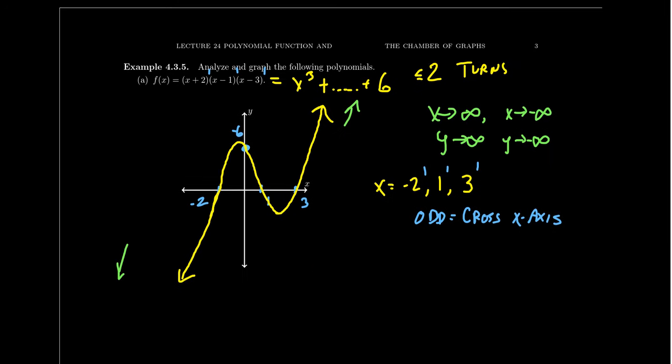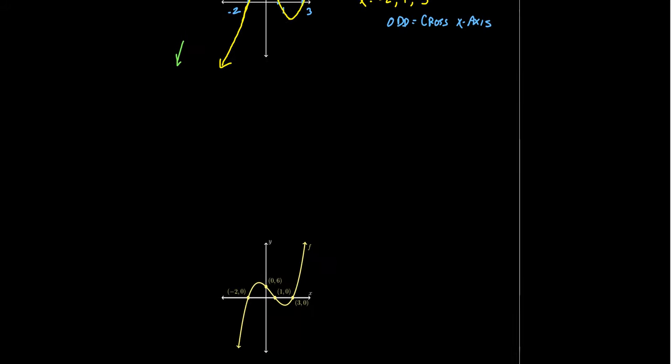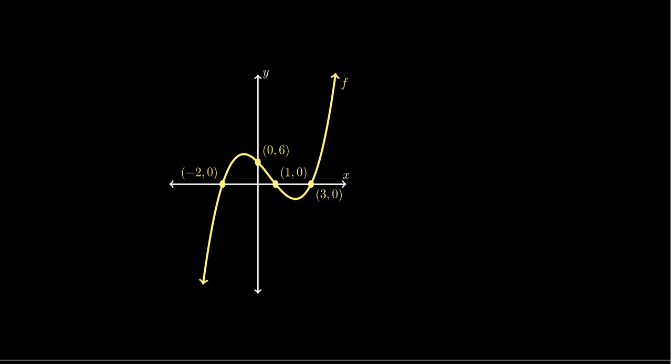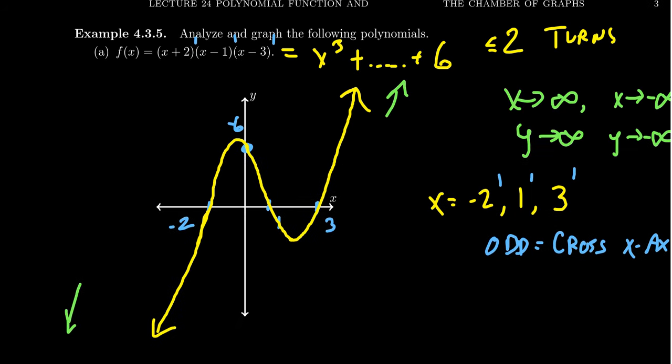Comparing with a computer-generated image, we did pretty well. Our picture is not perfect because we don't know exactly where the turning points are — it looks like there's one near x = 2 and one near x = −1, but we can't guarantee that. To find the turning points precisely, we have to use calculus — specifically the derivative — which is beyond the scope of this class. Our picture is meant to give us intuition about the graph's shape, not a perfectly scaled drawing.